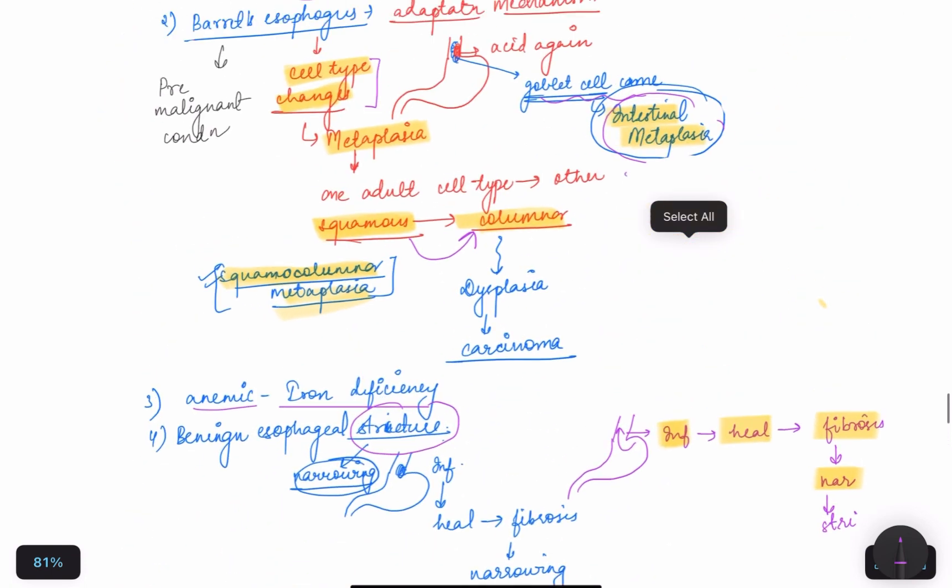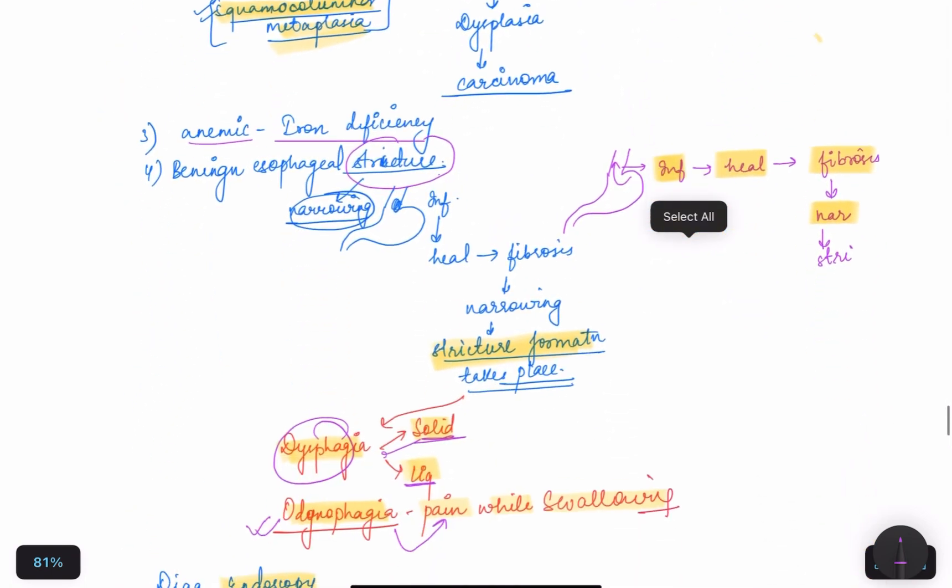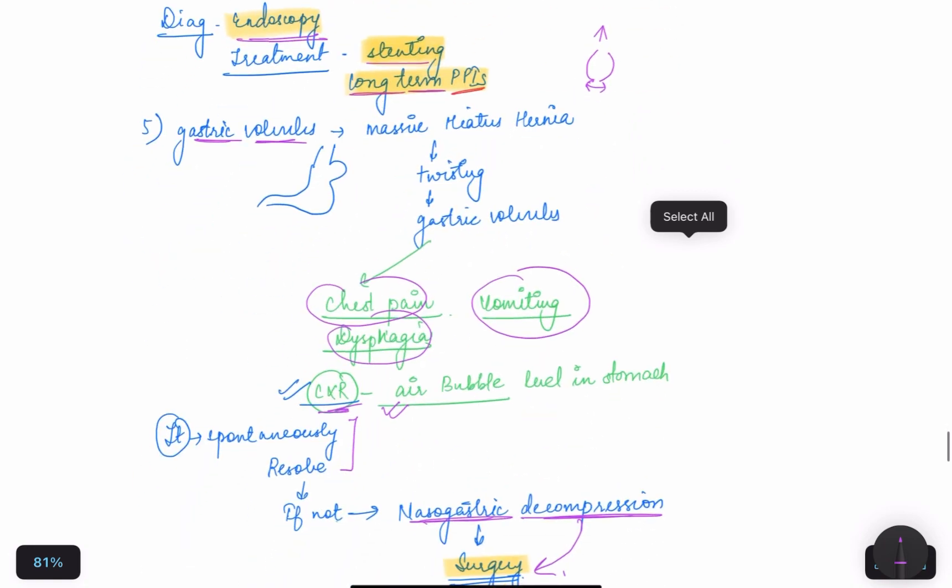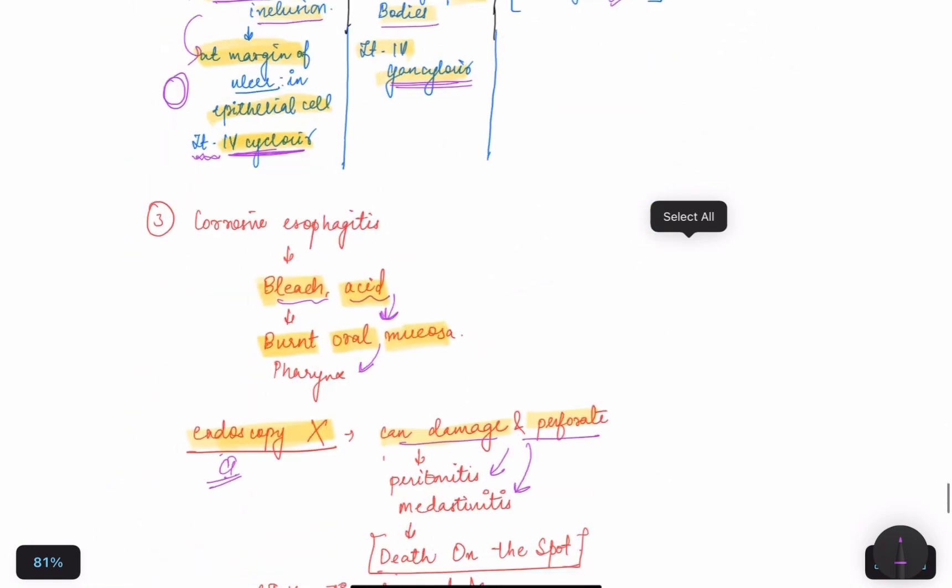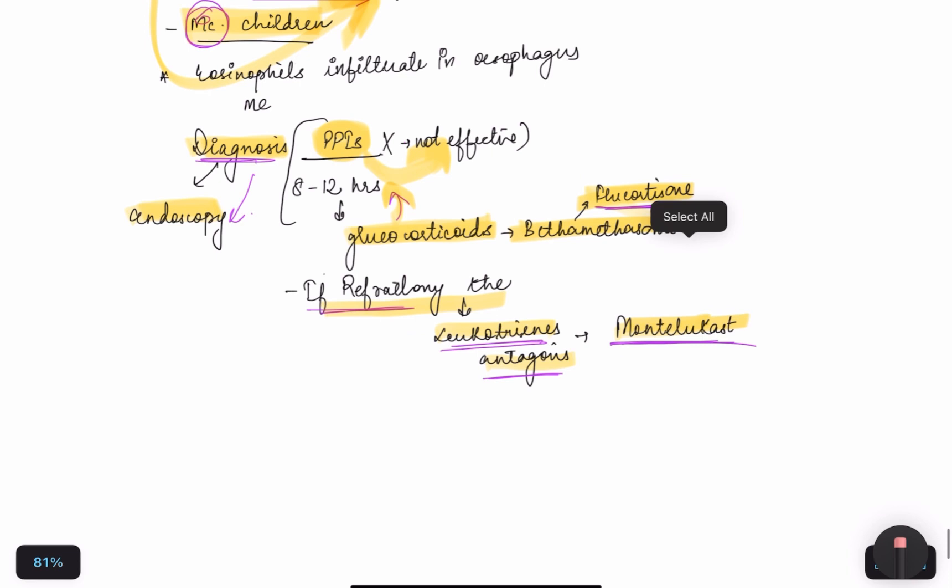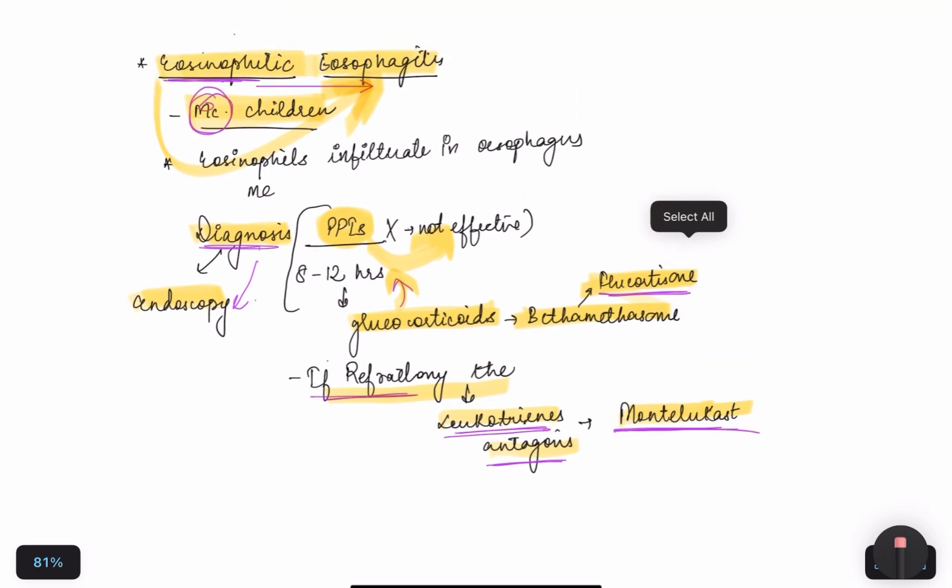We have complications like anemia, Barrett's esophagus, esophagitis, benign esophageal stricture, gastric volvulus, and eosinophilic esophagitis. So thank you, that's it for the video. Please subscribe to my channel for more videos. Thank you so much.